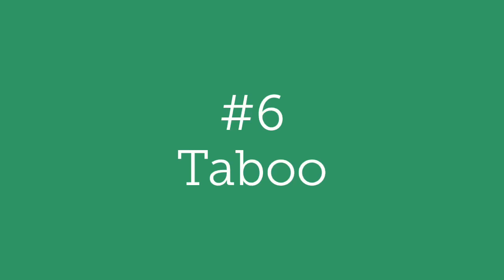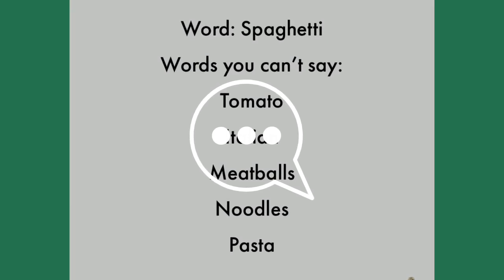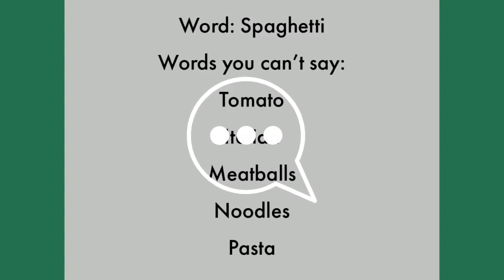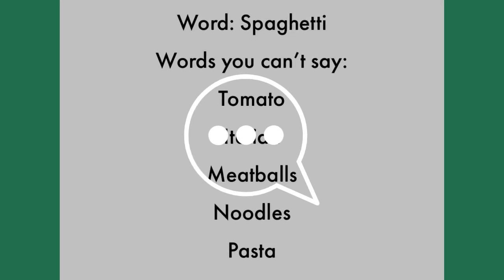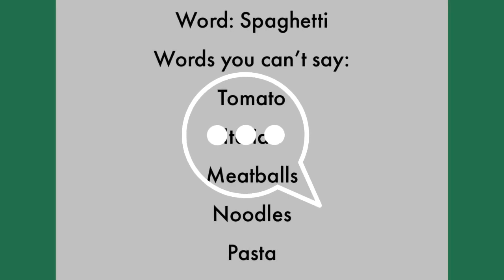The sixth game is Taboo, which can be easily modified to fit Zoom. For example, the audience needs to figure out the word 'spaghetti,' but the player cannot say tomato, meatballs, Italian noodles, or pasta as hints. The word list can be sent to blind or visually impaired players through Zoom chat or text messages, so they can keep up with the game and know the words they're supposed to say.